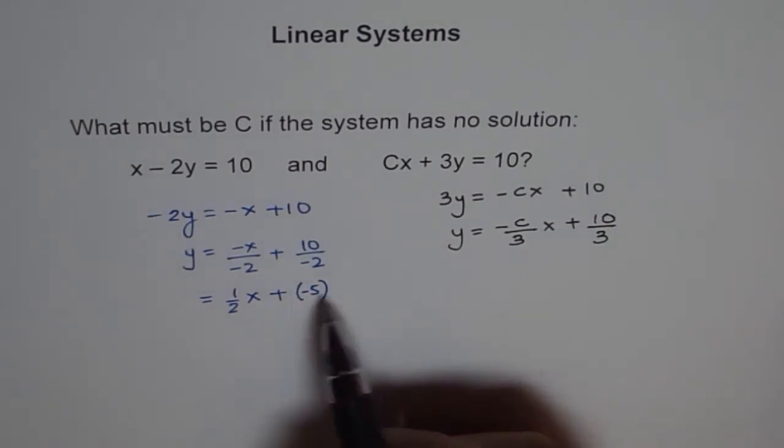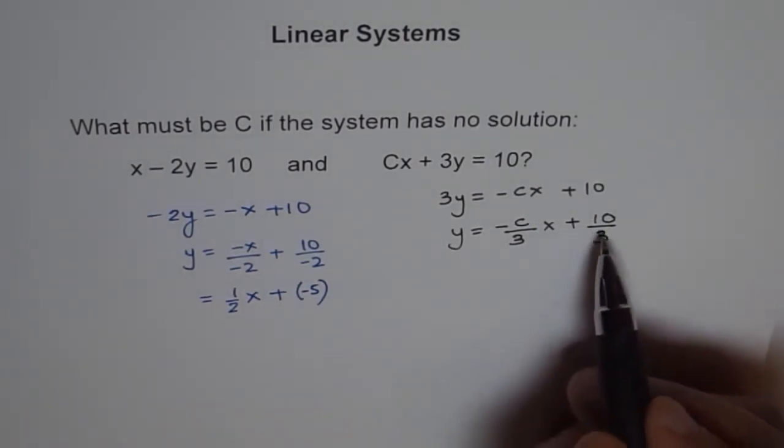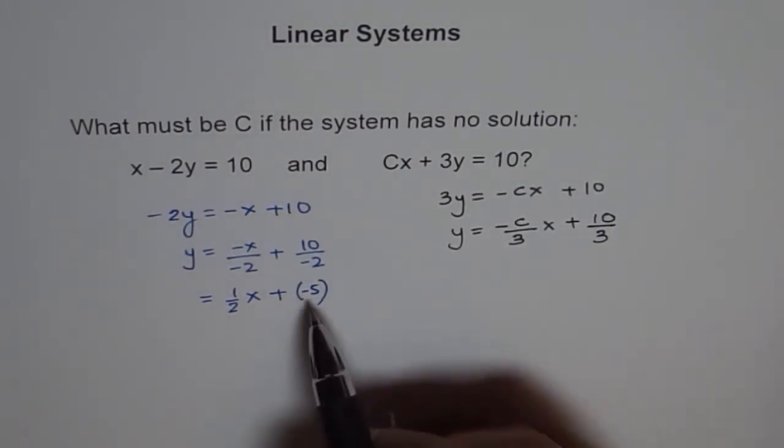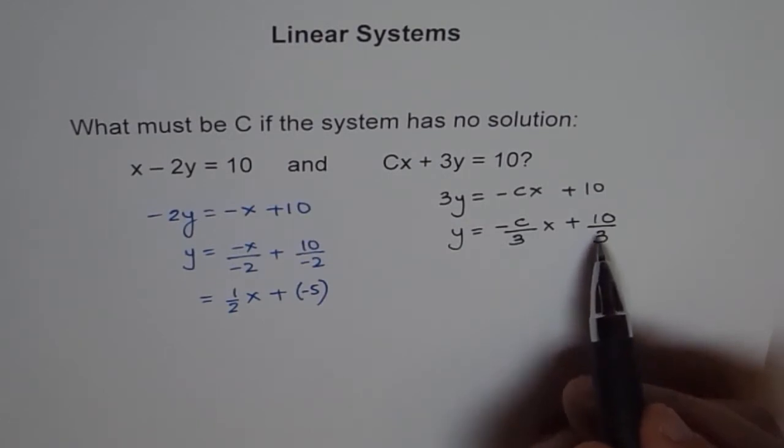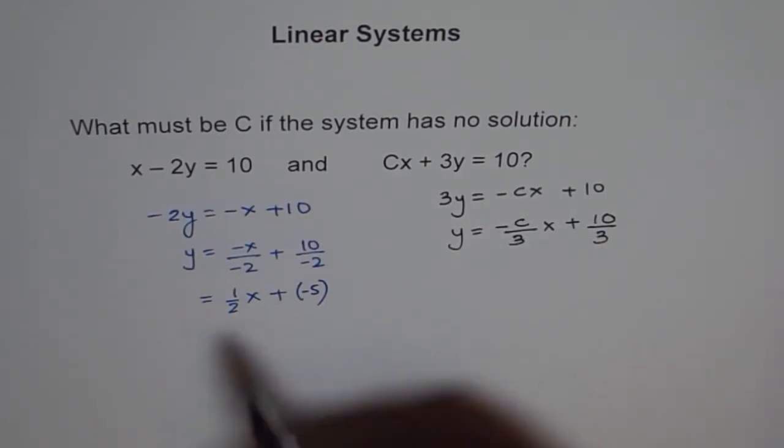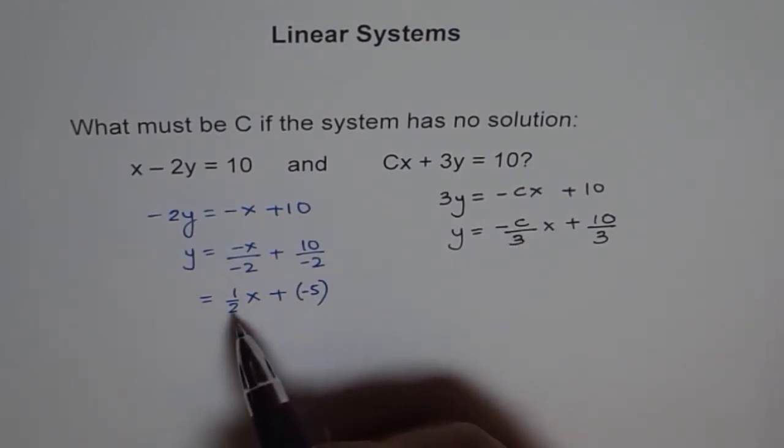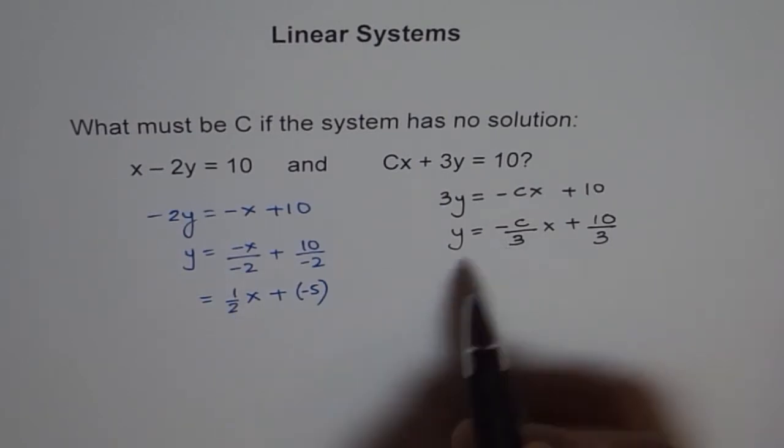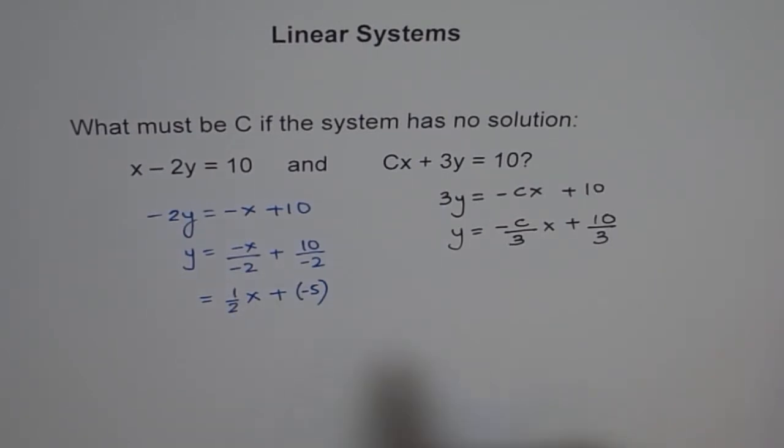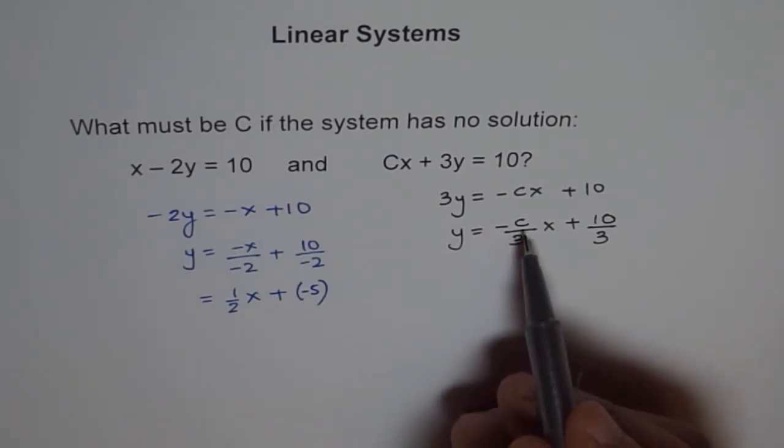Clearly, by comparing these two equations, we have different y-intercepts, right? Now, we need same slope. Same slope means that this minus C over 3 should be equal to half. The coefficient of x in both the equations should be same. Now, if we equate that, then we can get the value of C.